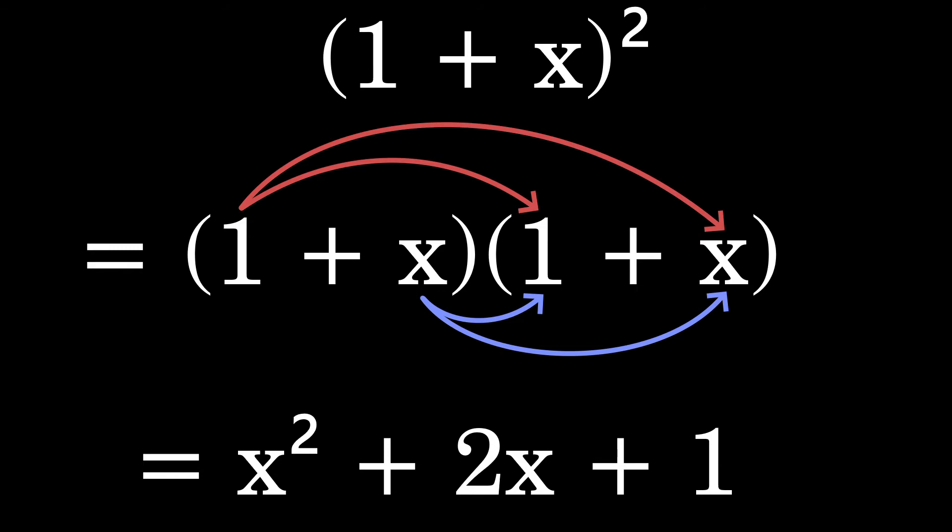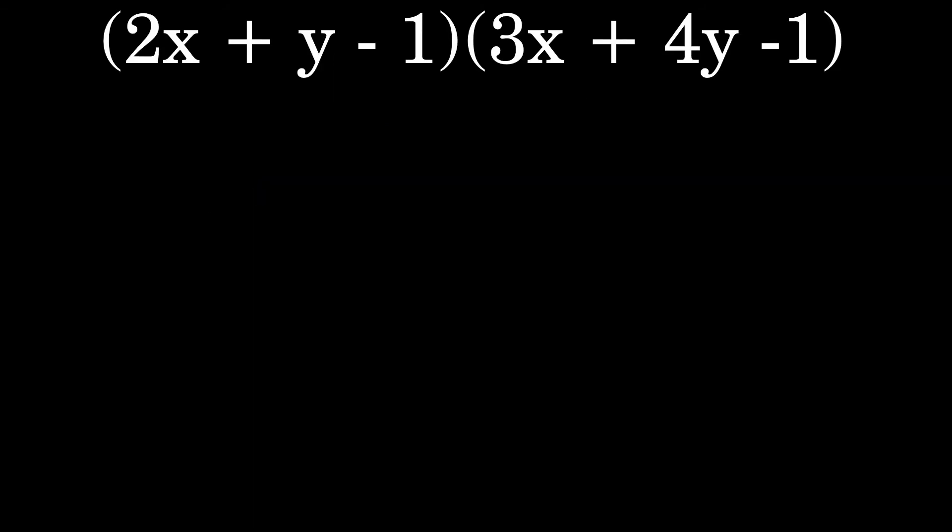Finally, we'll look at a multi-variable problem. The group of 2x plus y minus 1 times the group of 3x plus 4y minus 1. Wow, that's quite a few variables there. Quite a few terms. FOIL doesn't work. We have to just use the distributive property. We go from left to right multiplying each term individually with themselves. But it's not that much different to how we were doing it normally.